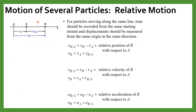Now in this slide we will discuss the rate of motion between several particles. Consider two particles, particle A and particle B. The position of particle A is xA and the position of particle B is xB, relative to the origin O. For particles moving along the same line, time should be recorded from the same starting instant and displacement should be measured from the same origin.